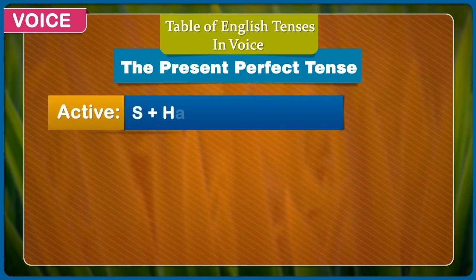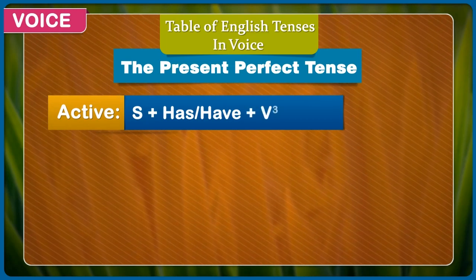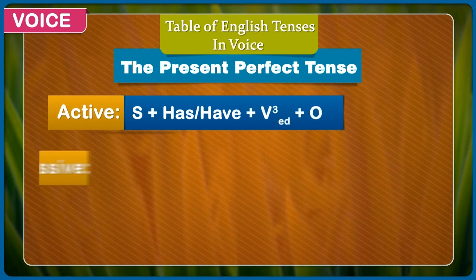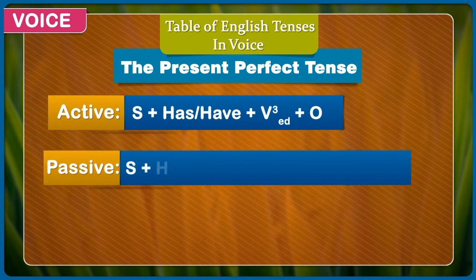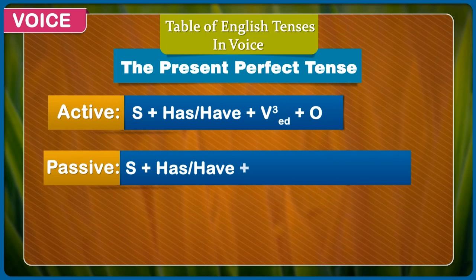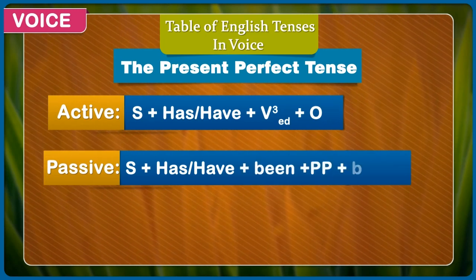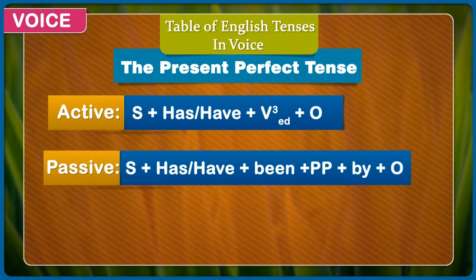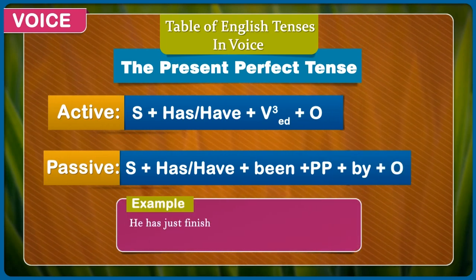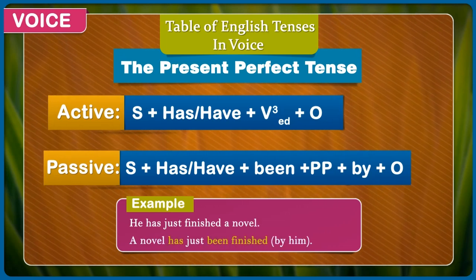The present perfect tense. Active: subject + has/have + third form of verb (-ed) + object. Passive: subject + has/have + been + past participle + by + object. Example: He has just finished a novel. A novel has just been finished by him.